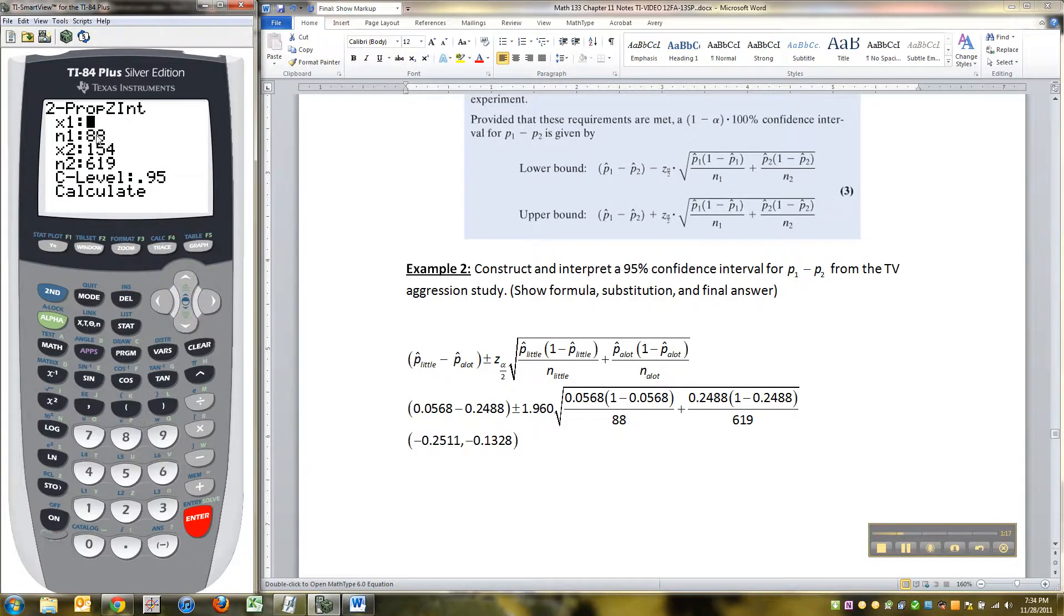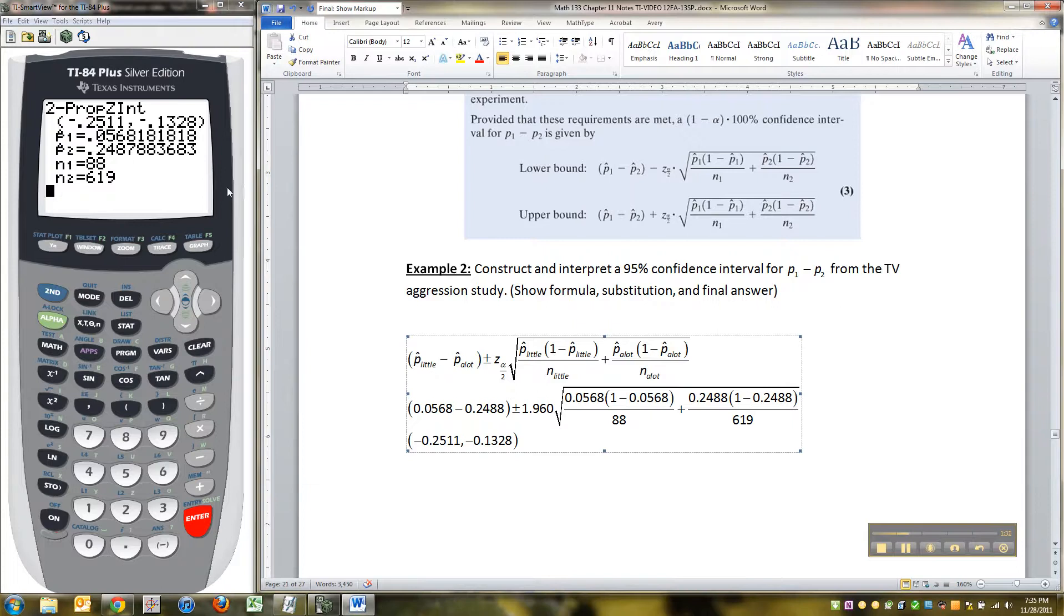Okay, so now my numbers are still in there from before. If they weren't, of course, I'd just retype them. But it was 588, 154, 619. My confidence level is 0.95, so I go down to calculate, and press enter, and there we go. So you can see, I got the p1 hat right here from 0.0568, and then p2 hat's 0.2488, and then I filled in all those parts, and n1 was 588, and n2 was 619.